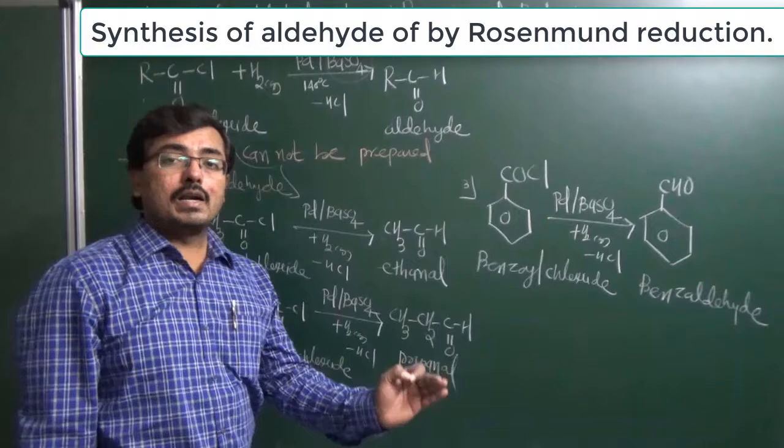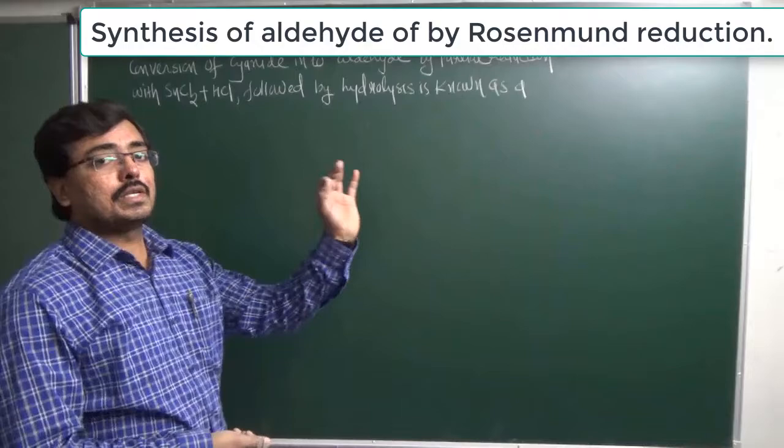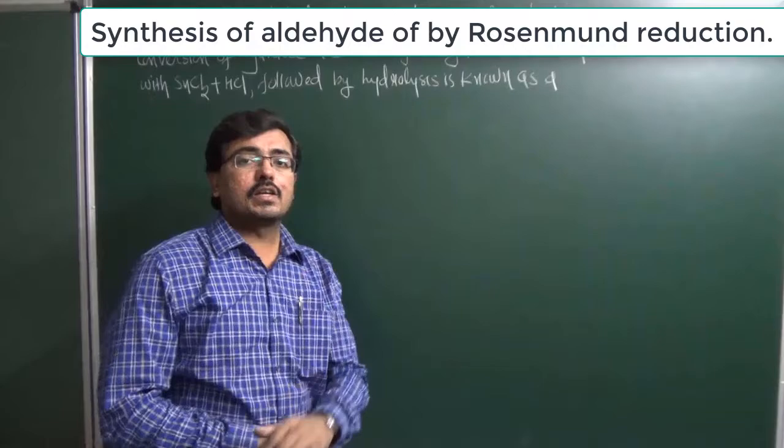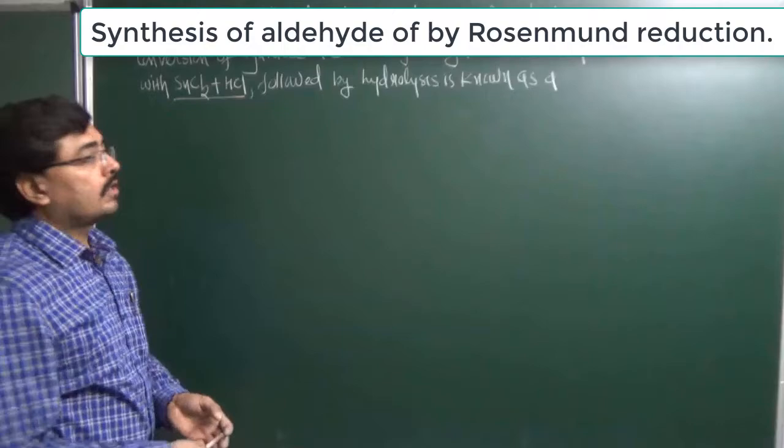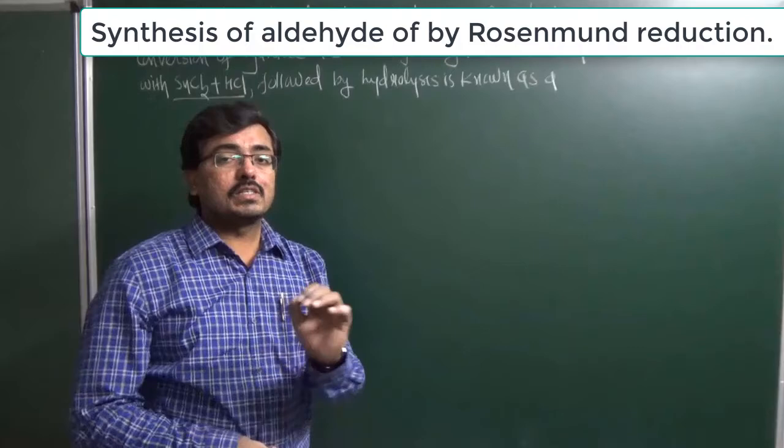In today's lecture we will also discuss synthesis of aldehyde by using the Stephen Reaction. The Stephen Reaction is used to convert a cyanide compound into an aldehyde by partial reduction using a catalyst of stannous chloride (SnCl2) in acidic medium, followed by hydrolysis. This reaction is known as the Stephen Reaction.